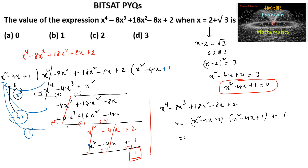Since x square minus 4x plus 1 is equal to 0, we get 0 into x square minus 4x plus 1, plus 1. So the answer is 1. At x equal to 2 plus root 3, the given expression value is 1, which is option B.